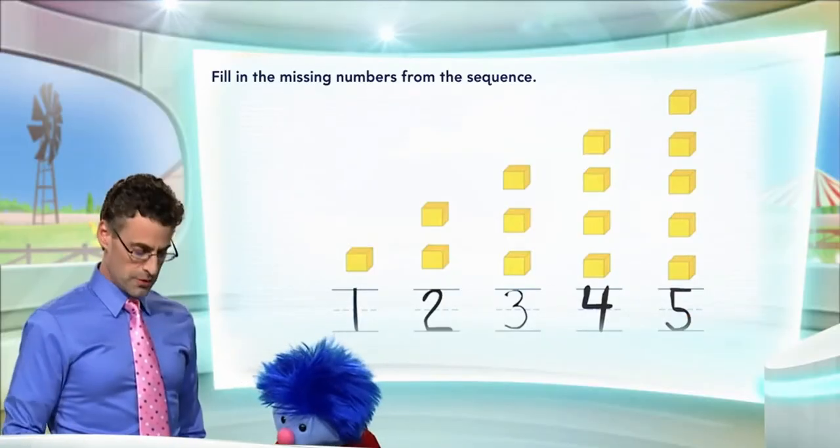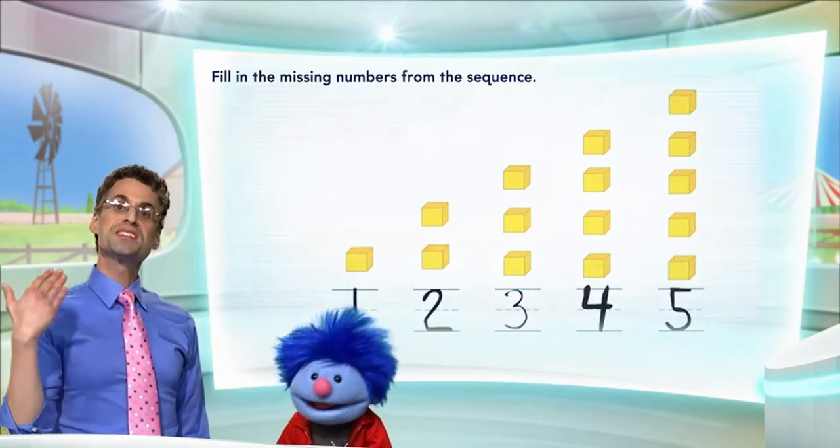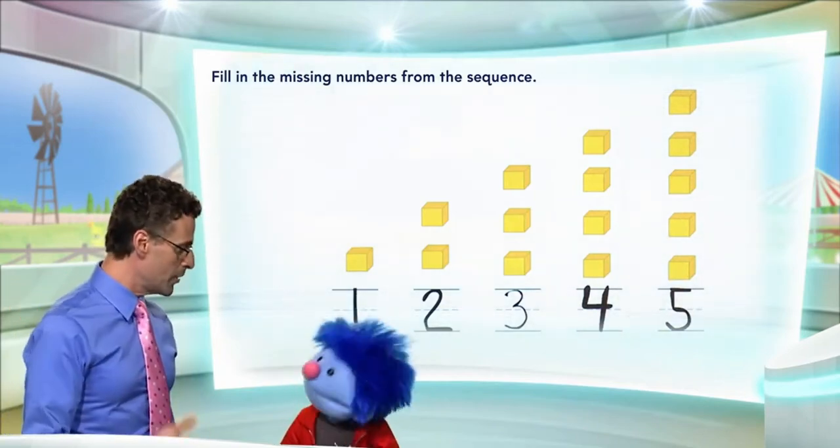And so now we have the correct order of counting. 1, 2, 3, 4, 5, which is the exact order you're going to want to order your jerseys in.